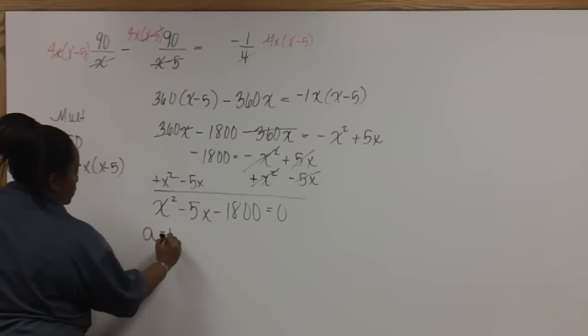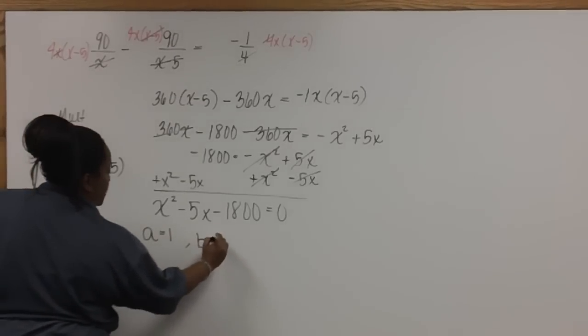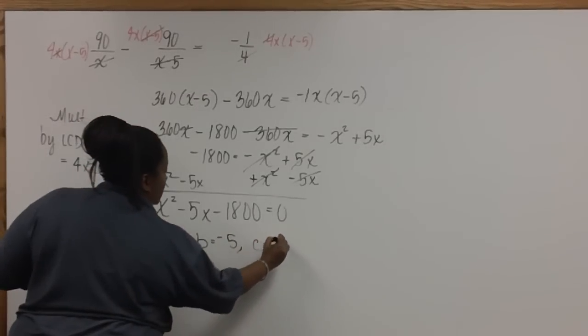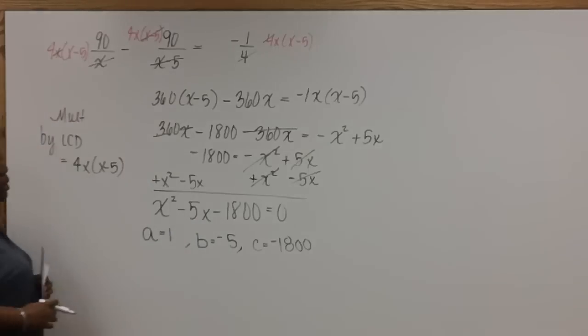Where A is 1, B is negative 5, and C is negative 18. Now we're ready to use our quadratic formula.